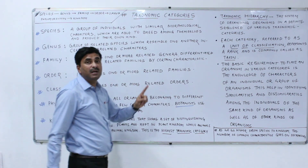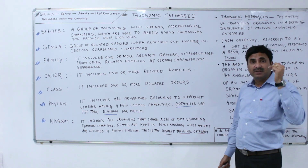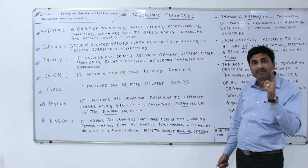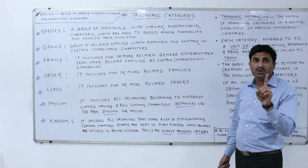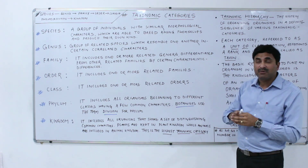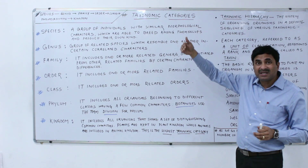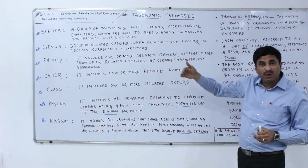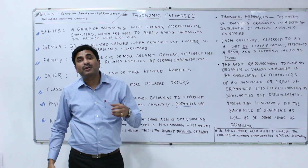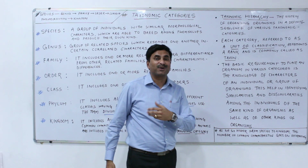To summarize, when studying taxonomic categories, always follow this order: species, genus, family, order, class, phylum, and kingdom. Remember that when we move from species to kingdom, the common characteristics go on decreasing — more common characters are present in species and fewer in higher categories. Today we discussed taxonomic categories; in coming videos we will discuss more topics related to taxonomy. Thanks for watching.